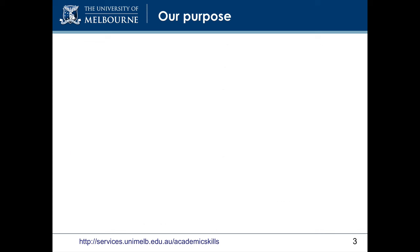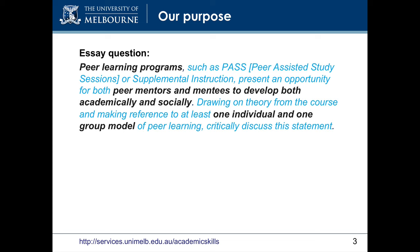So the first thing is to determine what our purpose is. In this case, let's imagine we're writing an essay responding to the question below. First, we need to consider some criteria to determine the article's usefulness. We can see that the main topic is peer learning programmes, and we need to focus on the benefits, both academic and social, for mentors and mentees, as well as draw on both individual and group models.